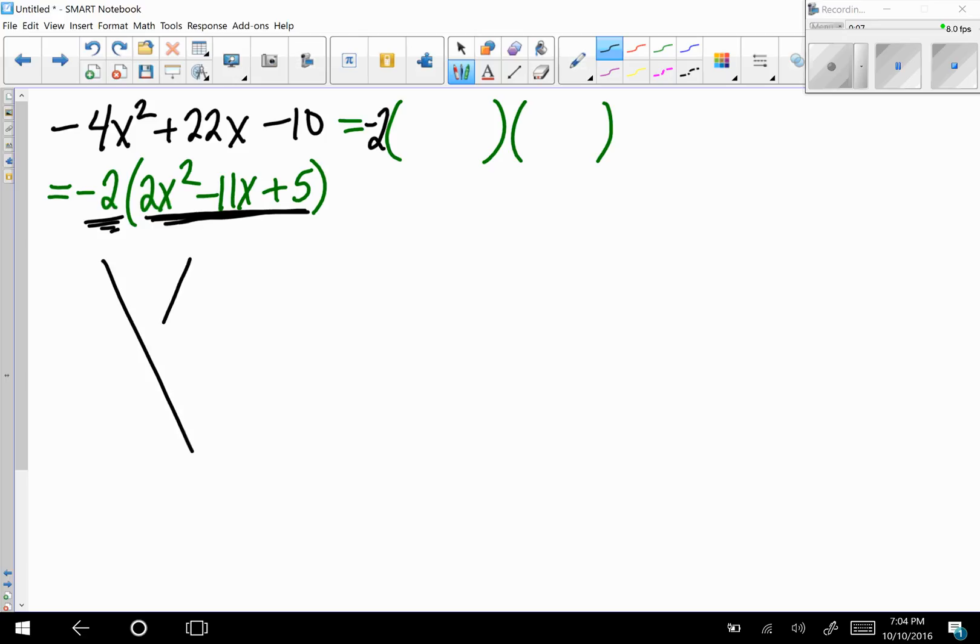So again, this right here is A times C. So two times five is 10. That's what you want it to multiply together to be, what you want it to add together to be negative 11. Well, this should be a pretty simple case, right? It'd just be negative 10 and negative one, but that would be silly to rewrite it like that.